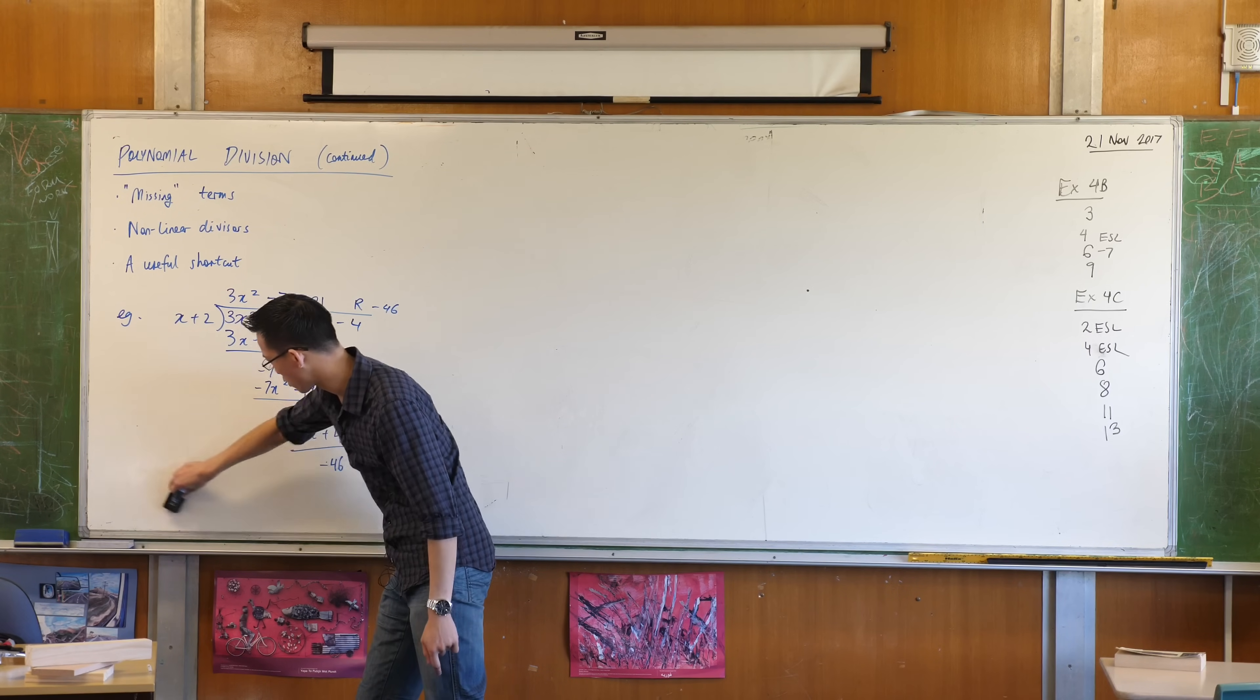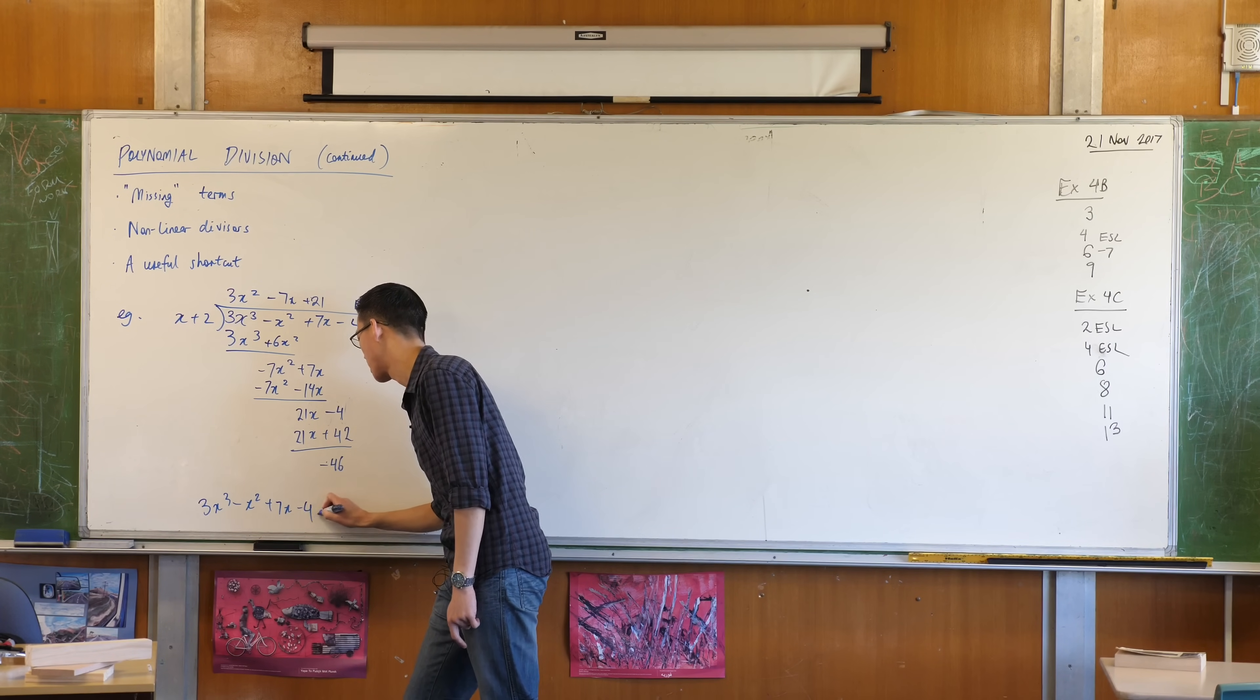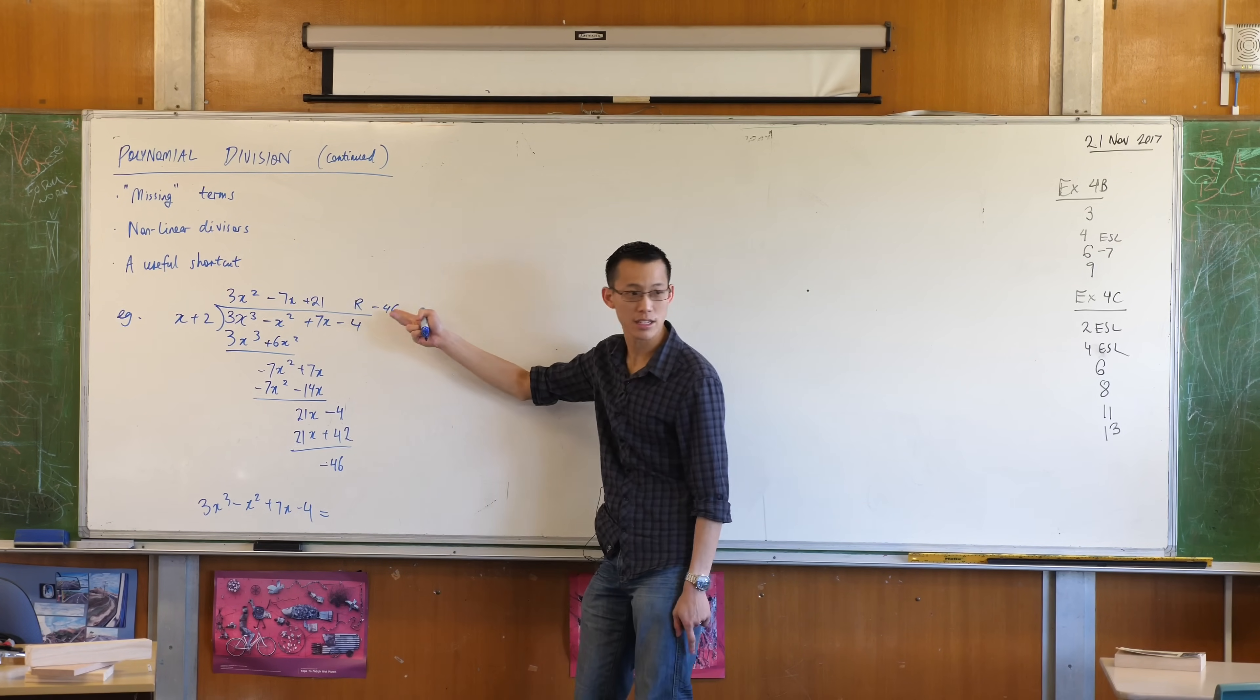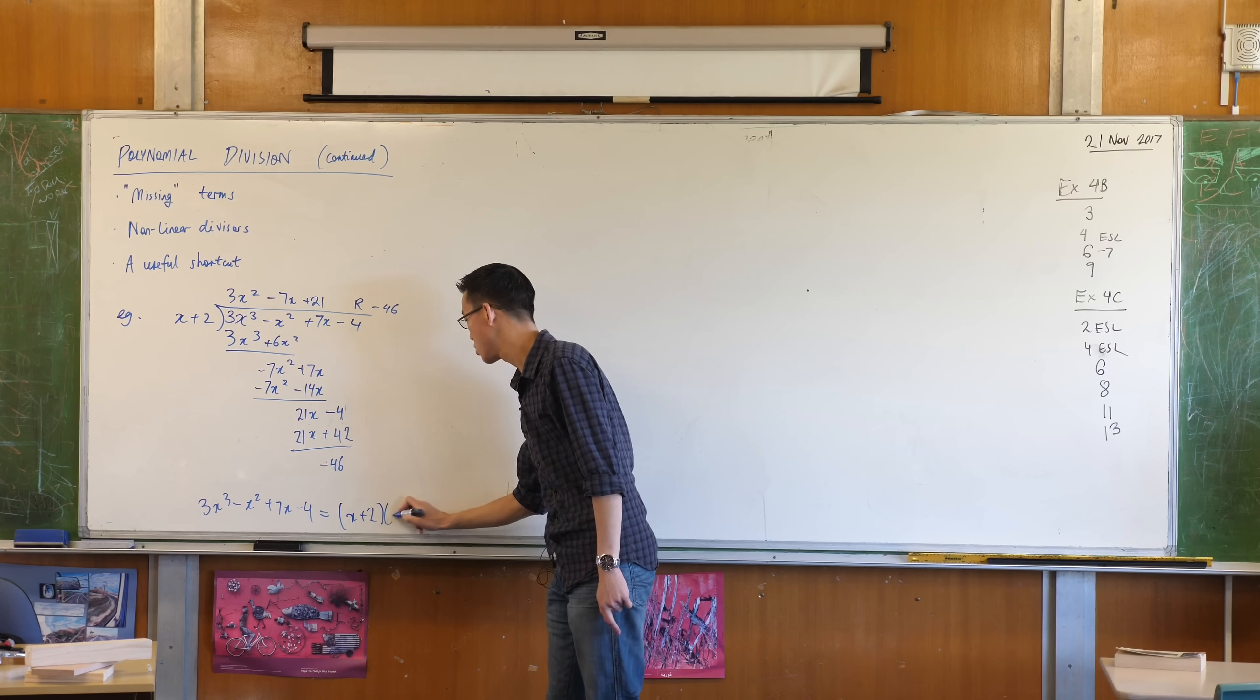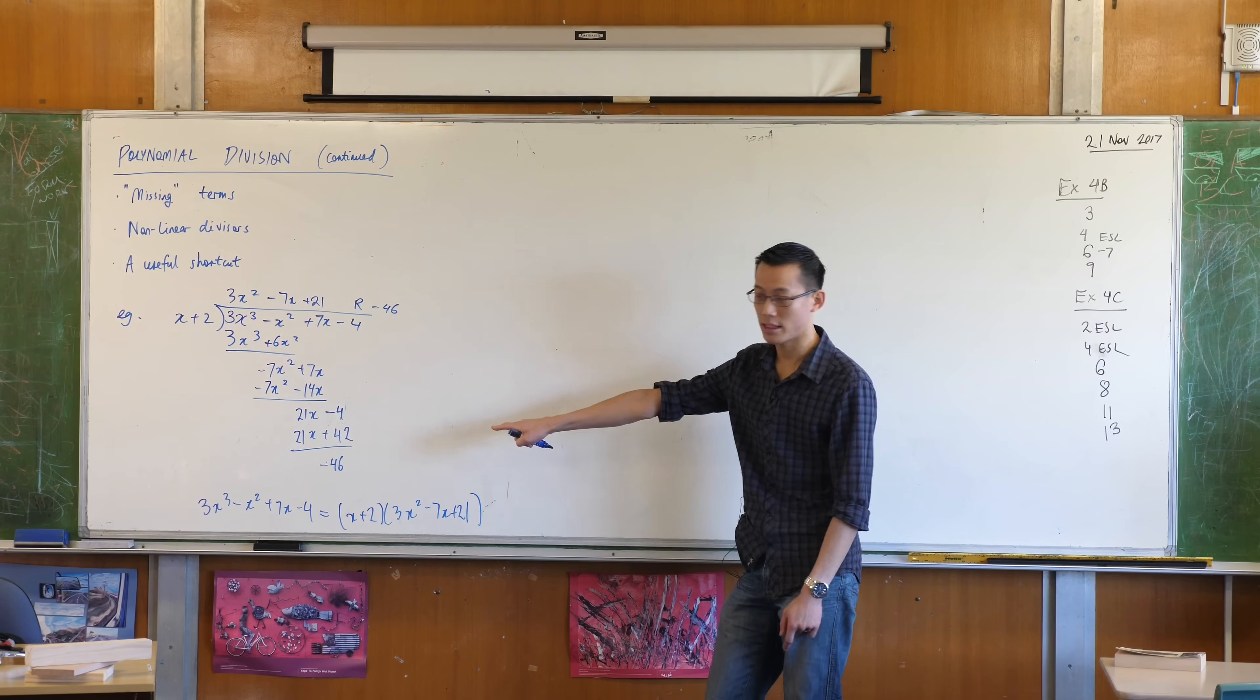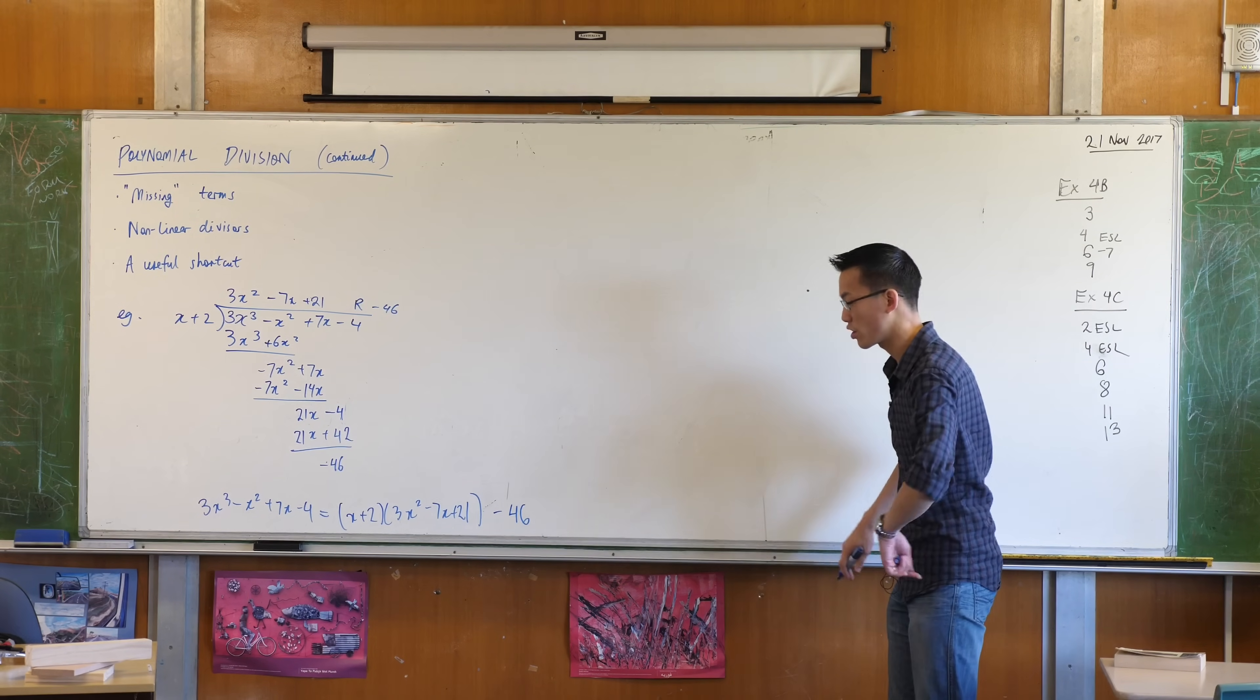That's the quotient. The dividend is here. I was just looking at the wrong line. 3x cubed minus x squared plus 7x minus 4. That's better. So this thing is your divisor multiplied by your quotient, except that there's the remainder also hanging on, right? So here comes the divisor, x plus 2. Here's your quotient, 3x squared minus 7x plus 21. But if you go ahead and you multiply that out, you don't get the original polynomial. You get the original polynomial with the remainder. And of course, you can go and double check that. That's one of the nice things. You just expand it out.